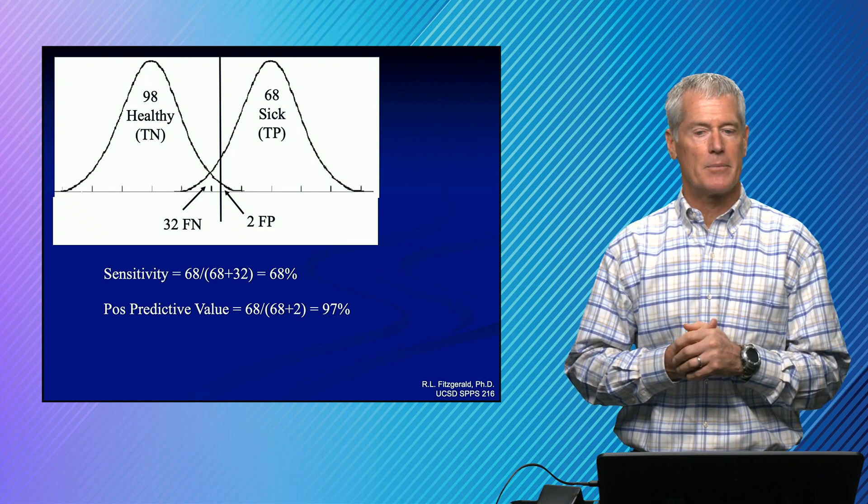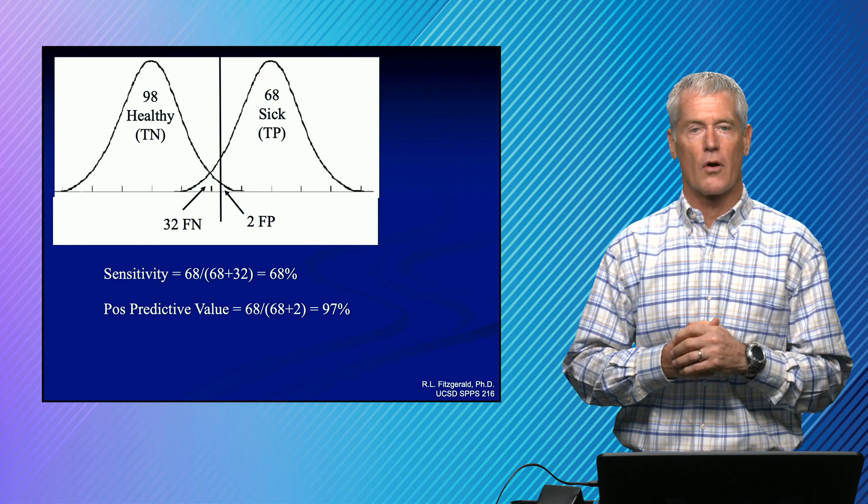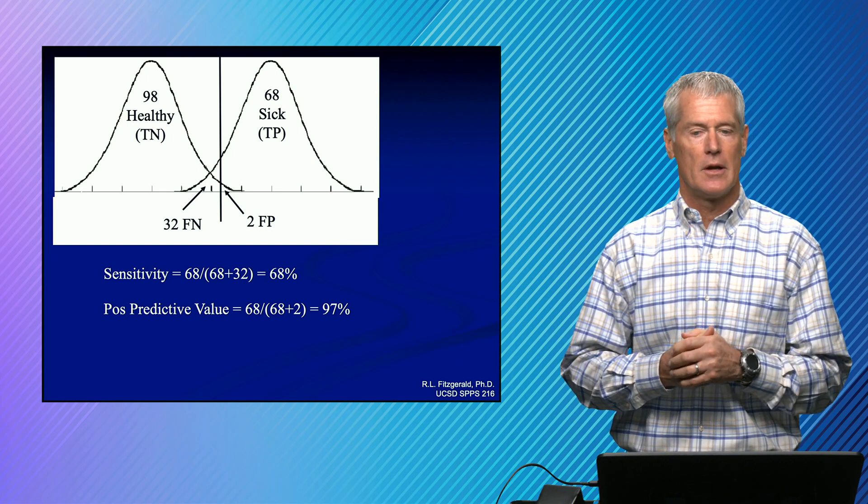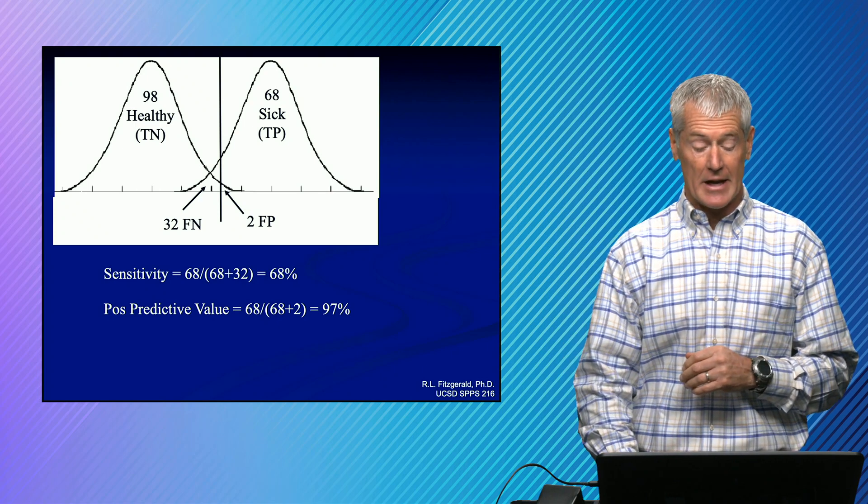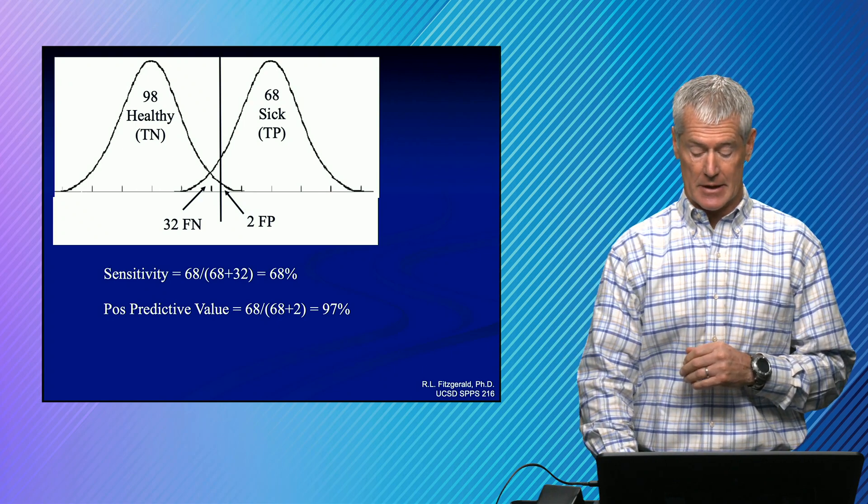Looking at the positive predictive value, that's the true positives over all the positive results, 68 over 68 plus two, which is the two false positives. We have 97 percent positive predictive value.